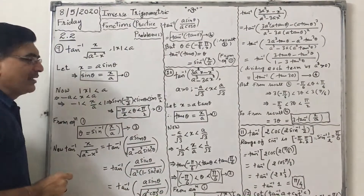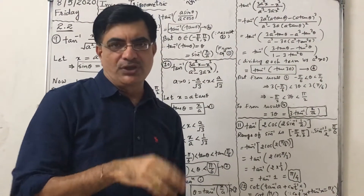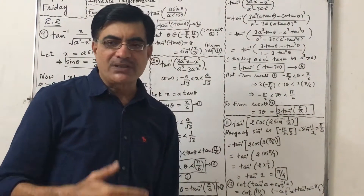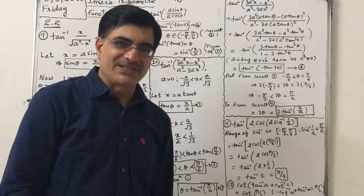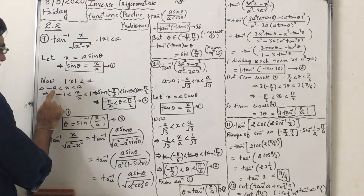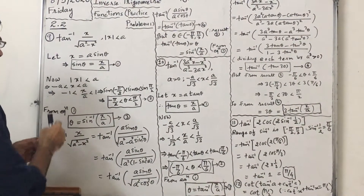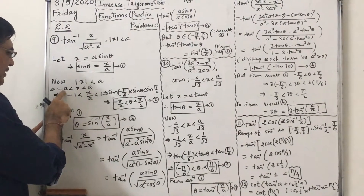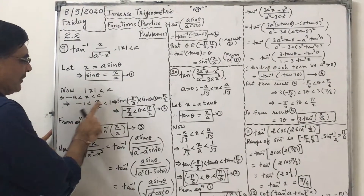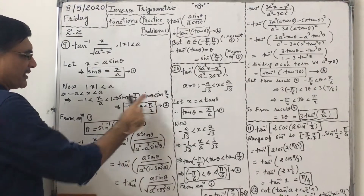I have to prove that θ belongs to the closed interval minus π/2 to π/2, because it is the range of sin⁻¹. So, mod x less than a — in other terms we can write minus a less than x less than a. Dividing by a, so minus 1 less than x/a less than 1.